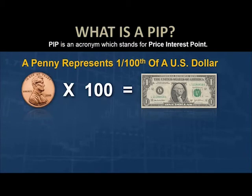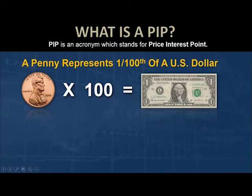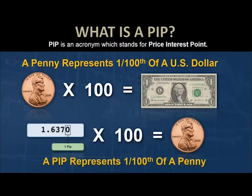In this market, we are looking to capture what are called PIPs — that stands for Price Interest Point. Most of you probably already know there are 100 pennies in a US dollar. A PIP is a unit of measure that is smaller than a penny. Just as there are 100 pennies in a US dollar, there are 100 PIPs in a penny. So a PIP represents one one-hundredth of a penny. The two numbers after the decimal point are your pennies; these next two are your PIPs.